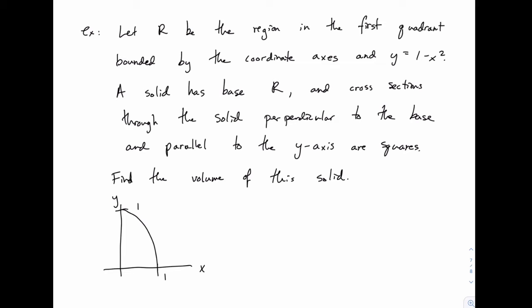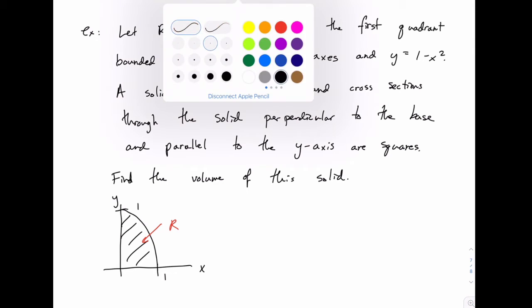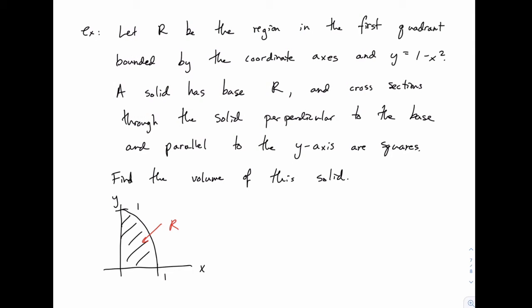So that's our region R, bounded by that curve and by the coordinate axes. It's this right here—bounded by the x-axis, the y-axis, and the curve y = 1 - x².